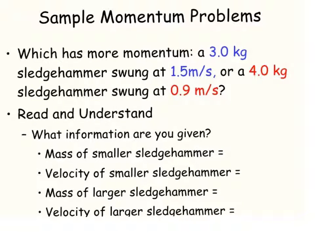Let's take a look at some more sample problems. So we want to know which has more momentum: a 3 kilogram sledgehammer, which has a speed of 1.5 meters per second, or a 4 kilogram sledgehammer that has a speed of 0.9 meters per second. So we need to look at the information we're given in the problem. The mass of the smaller sledgehammer is 3.0 kilograms, and the velocity is 1.5 meters per second. The mass of the larger sledgehammer is 4 kilograms, and its velocity is 0.9 meters per second.